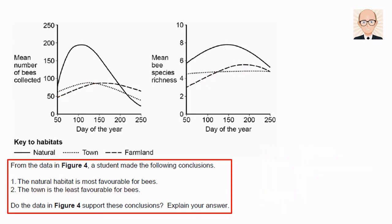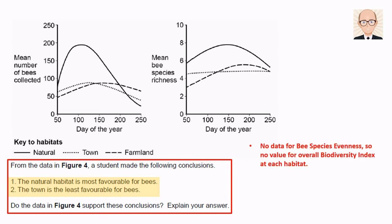Lastly, we could simply destroy both conclusions in one go by stating that there's no data available for the numbers of bees in each species, or the species evenness as it's called. In which case, there's no way to produce an overall Simpson's biodiversity index for any of these habitats, making both conclusions pretty worthless.